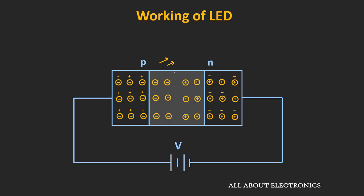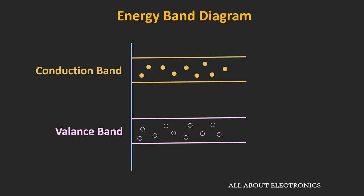And it can be further explained using the energy band diagram. So in the crystal structure, the free electrons have more energy than the electrons which are still in the valence orbit. We can say that the free electrons are in the conduction band, and the holes or the empty space left by the free electrons is still in the valence band. So whenever the electrons and holes recombine, the electrons from the conduction band come into the valence band, or in other words, from the higher energy level to the lower energy level.